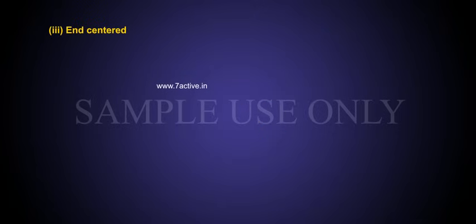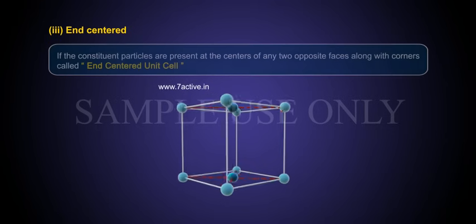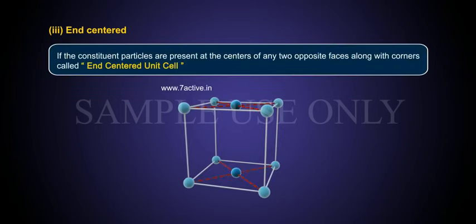End centered: if the constituent particles are present at the centers of any two opposite faces along with corners, it's called end centered unit cell.